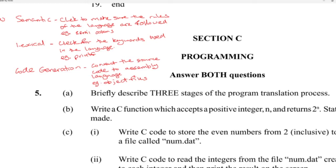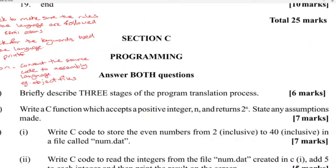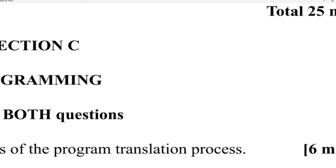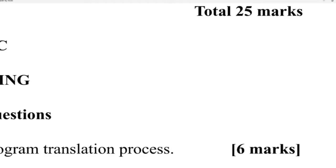Next, part B: write a C function which accepts a positive integer n and returns two to the n. State any assumptions made. So we write: int power(int n). We're naming the function 'power' which receives an integer n. Then we declare int c equal to zero.